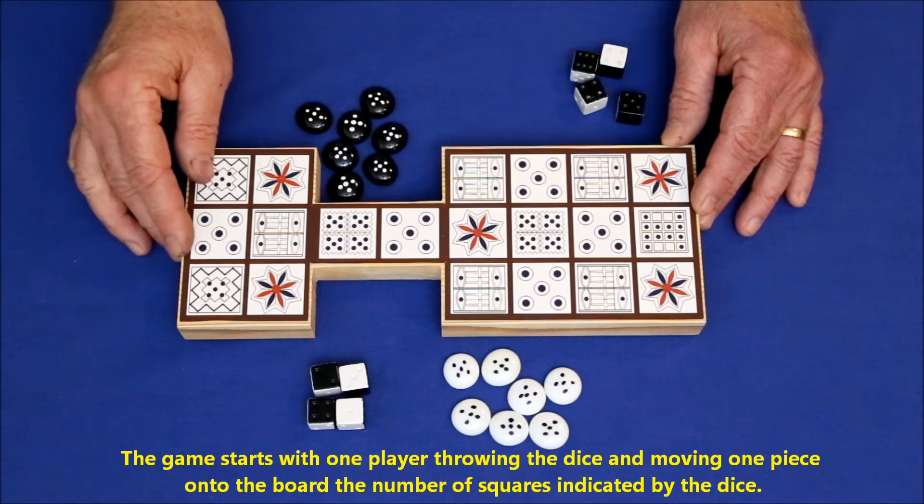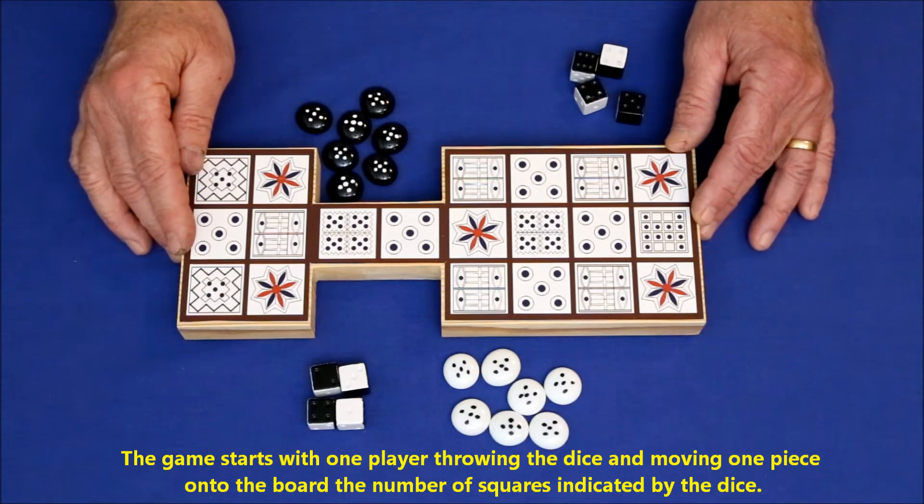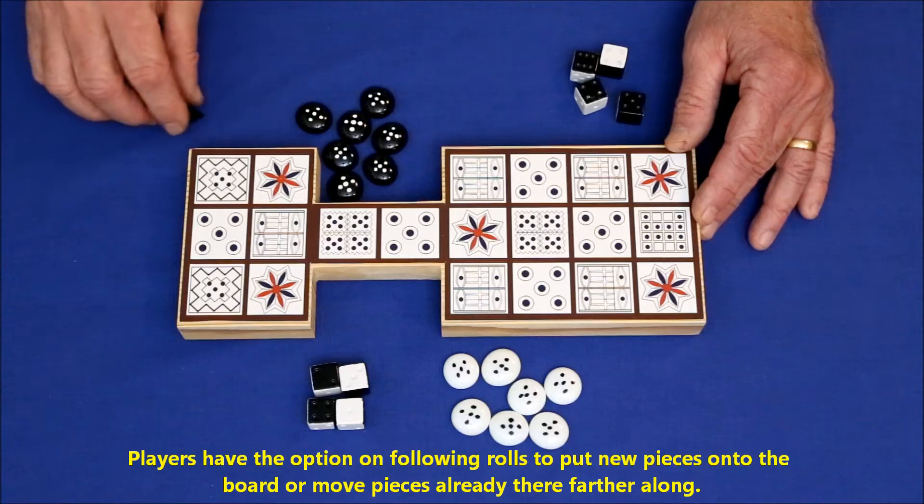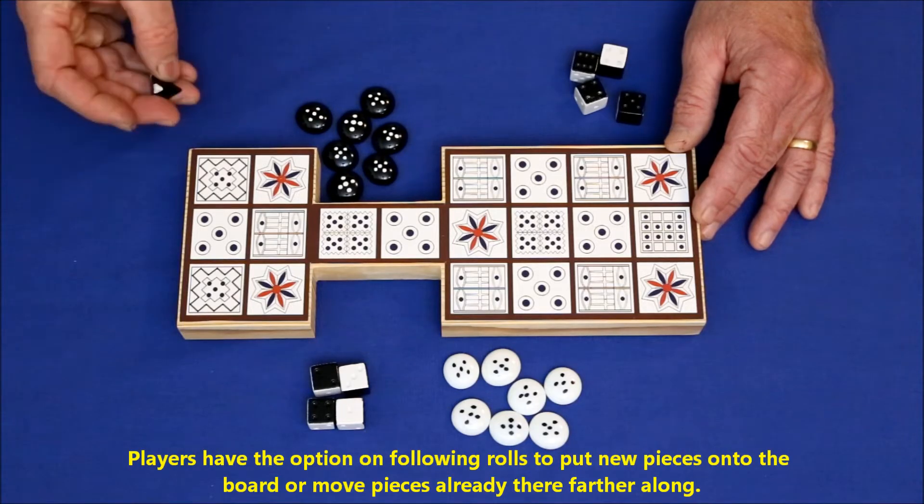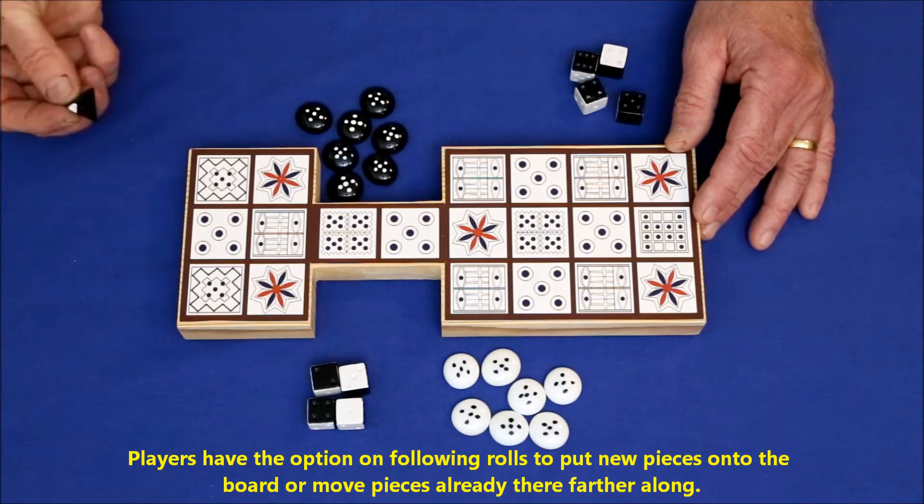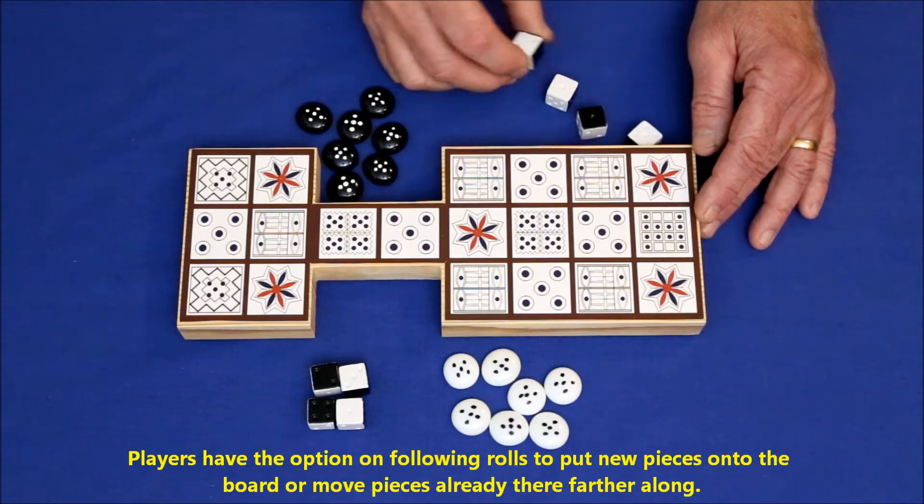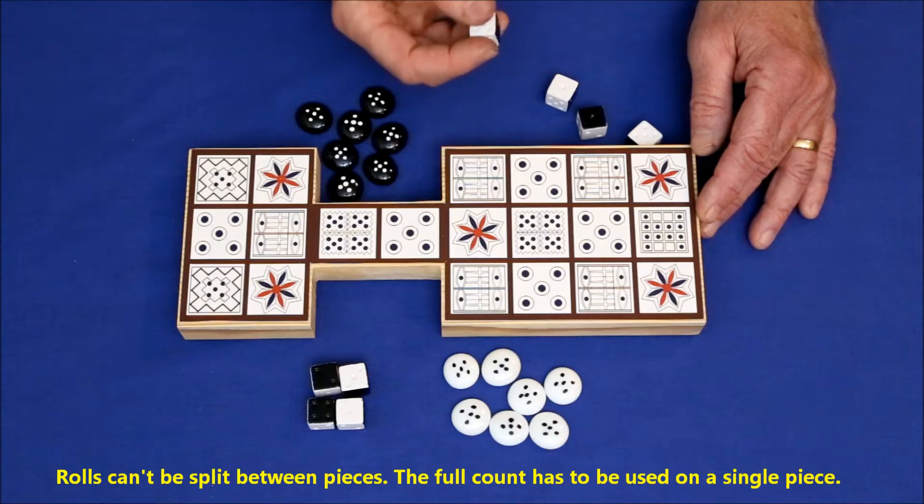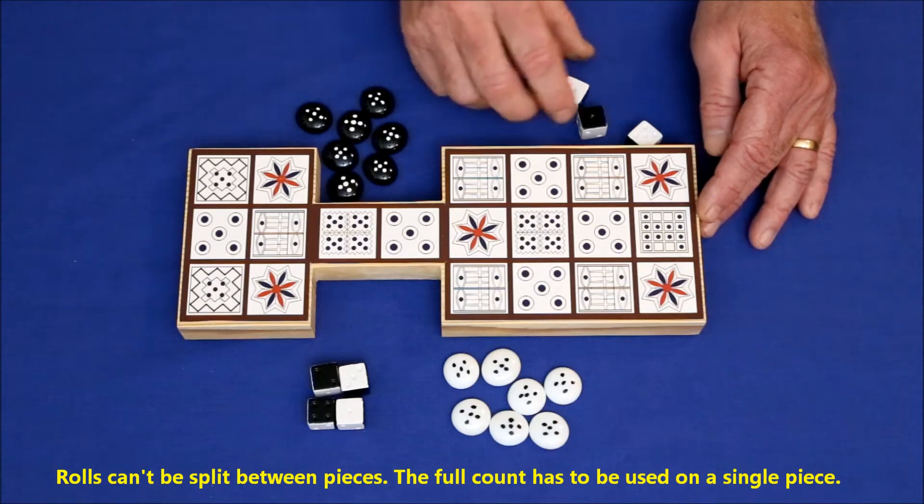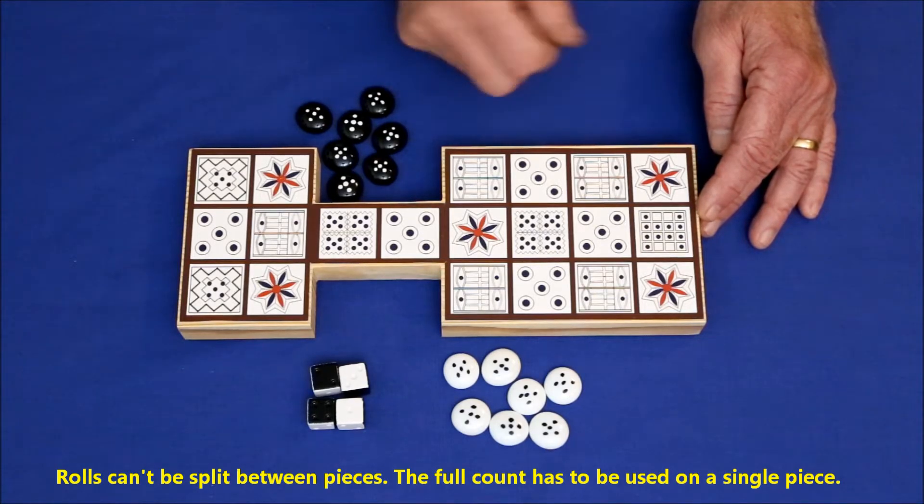Moves are determined by the throw of four binary dice. Originally, the dice were these pyramid-shaped things which are really difficult to pick up, so I recommend using regular dice that have been painted with three sides white and three that are black. They serve the same purpose and they're a lot easier to pick up.